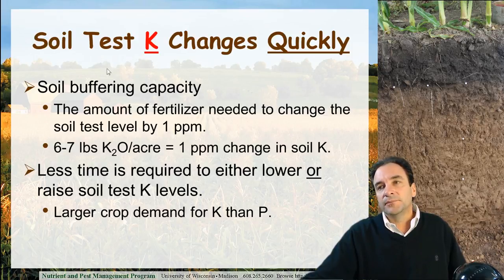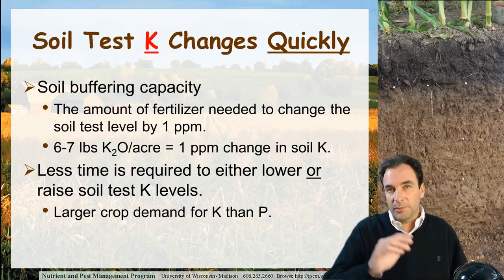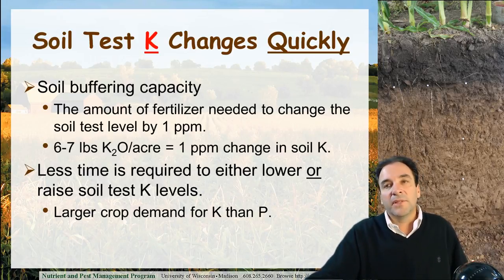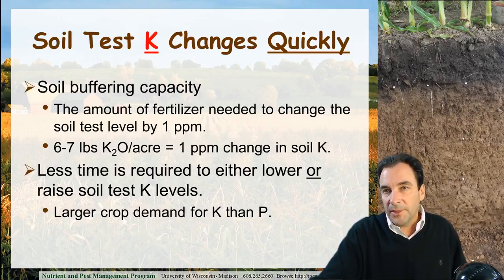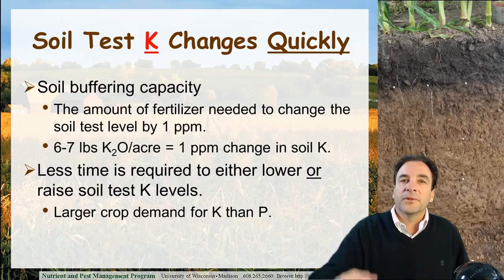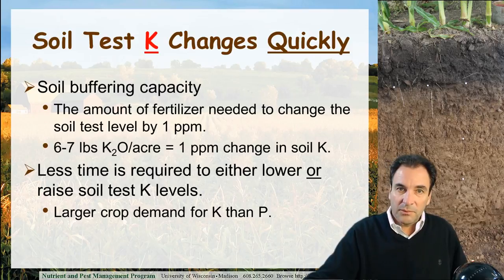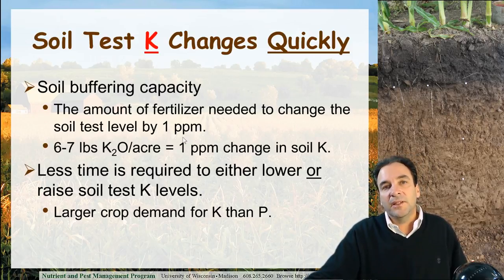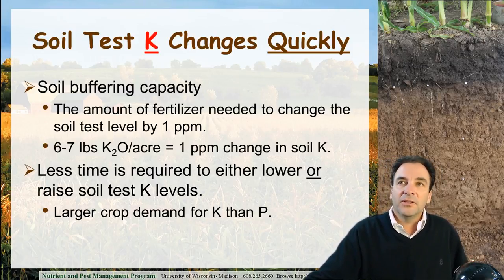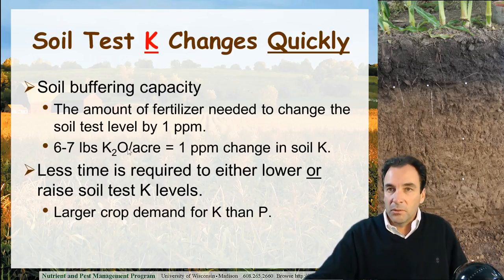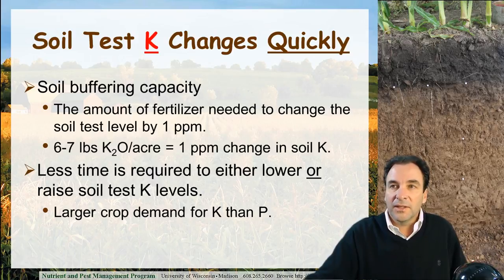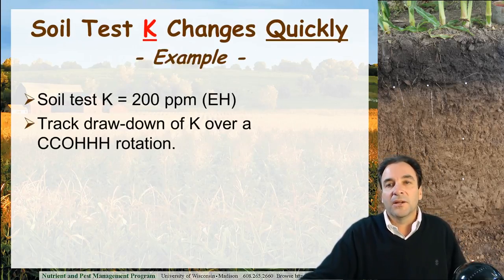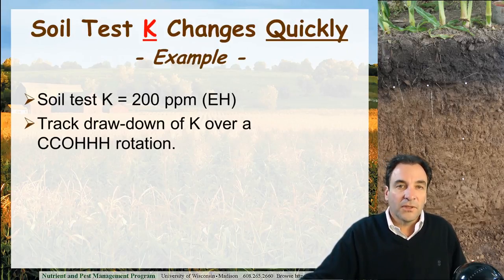The story of soil test K change is the opposite of phosphorus. Buffering capacity is the amount of fertilizer required to change a soil test value by one part per million. For phosphorus, we needed 18 lbs of P2O5 to result in a 1 ppm change. For potassium, the buffering capacity is significantly lower — only 6 to 7 lbs of K2O will result in a 1 ppm change. Therefore, significantly less time is required to lower or raise soil test K levels compared to phosphorus. Also, the demand of forage legumes and corn silage is greater for potassium than for phosphorus, so we draw down K levels quicker in the rotation.